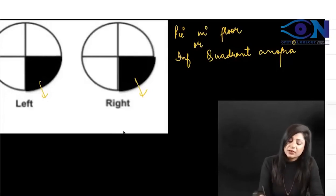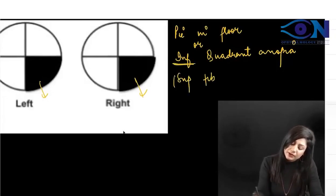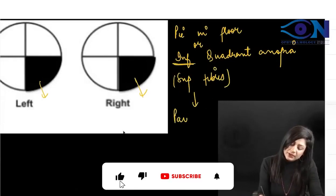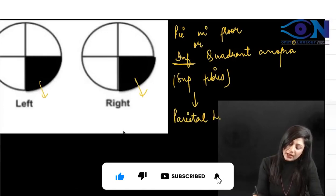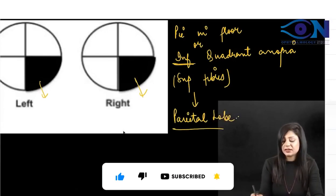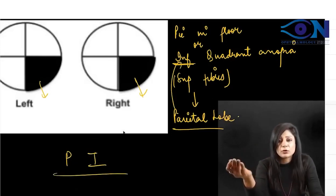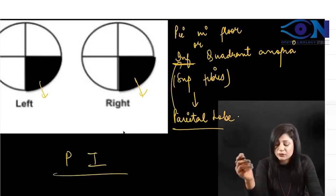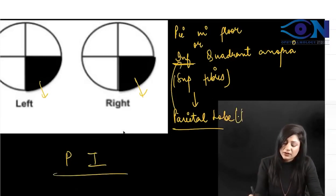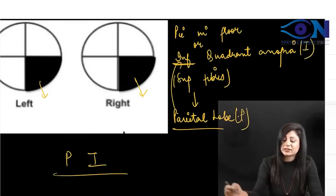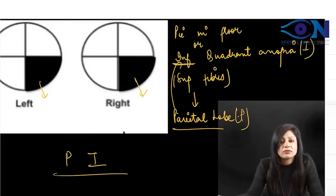If the inferior quadrant is affected, that means the superior fibers are involved. Superior fibers are present in the parietal lobe, so parietal lobe lesions lead to inferior quadrant anopia. The mnemonic is PI: P for parietal lobe and I for inferior quadrant anopia — similar to how we used the ST elevation mnemonic.